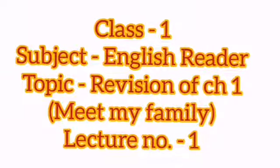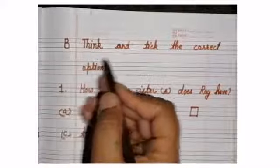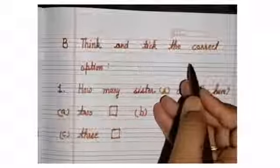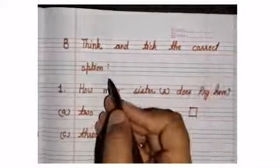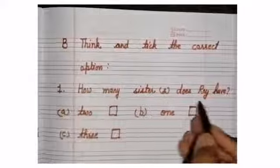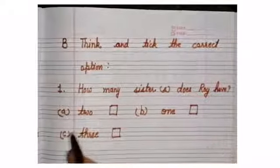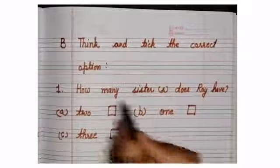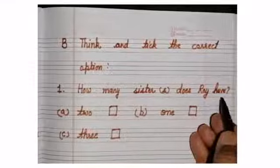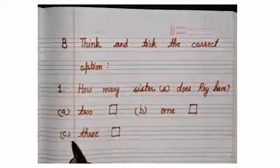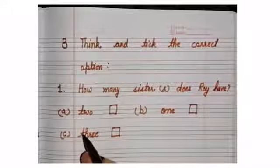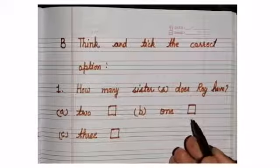We have already done this chapter. Today we will only revise it. Students, we have done chapter number 1, Meet My Family. Part B, Think and Tick the Correct Option. We have given these questions and we have to choose the right option. We need to choose the right option. Let's start.